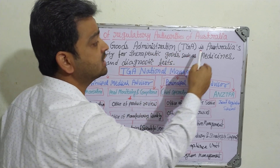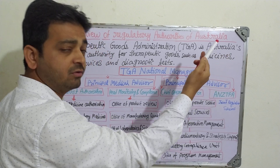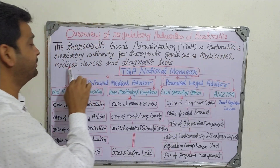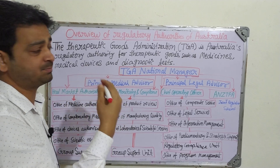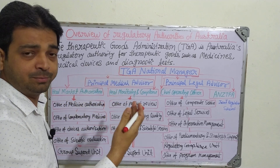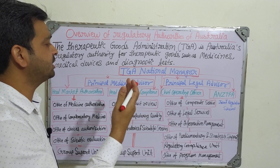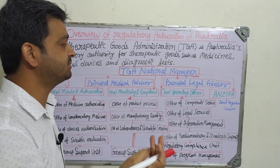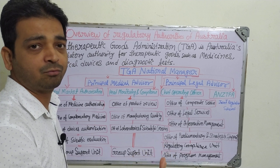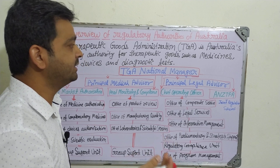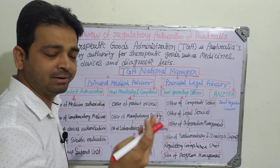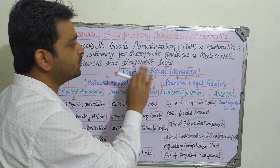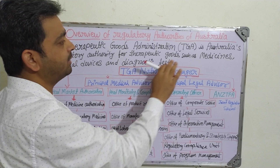Therapeutic goods include medicines such as tablets, capsules, ointments, liniments, lotions, and syrups; medical devices and equipment such as tablet punching machines, HPLC, HPTLC, and GCMS instruments; and diagnostic kits for measuring diabetes, lipid profiles, blood contents, malaria, parasites, and COVID-19.